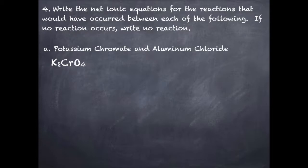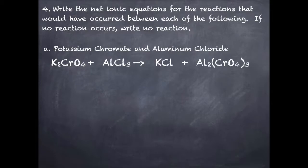Let me show you one example. I'm going to combine potassium chromate and aluminum chloride. Potassium chromate is K₂CrO₄, reacting with aluminum chloride. This produces potassium chloride and aluminum chromate. Before doing anything, check your charges and balance: I've got two aluminums on the product side, so put a two there. I've got three chromates, so put a three in front of potassium chromate, and then I need six potassium chlorides.